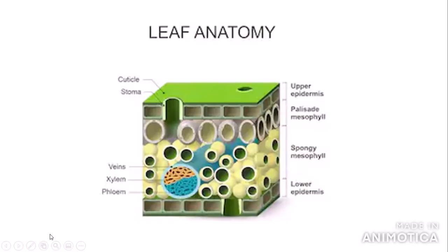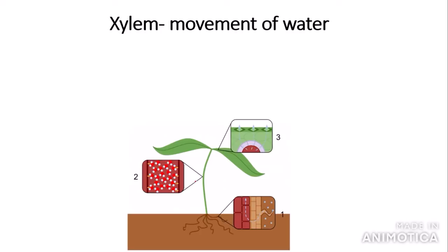Here is the cross section of a leaf, which you will have probably seen before in the gas exchange section. The main parts that we want to focus on today are the xylem and the phloem. The xylem and phloem are vessels within the leaf, contained within one large vessel. The xylem are the vessels in the top half and the phloem are the vessels in the bottom half.